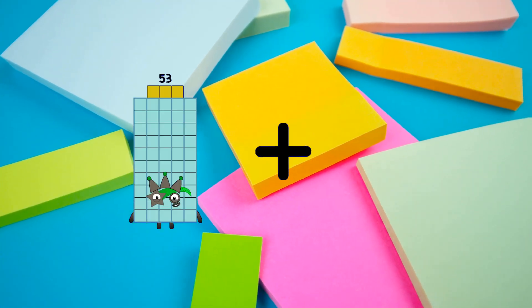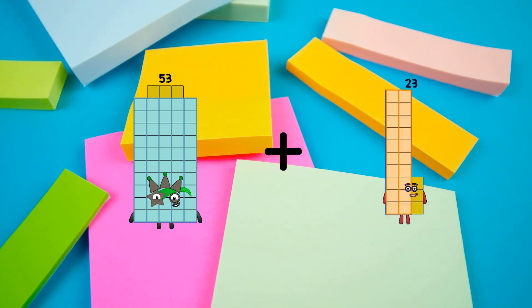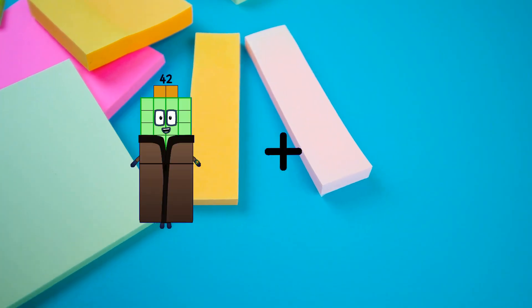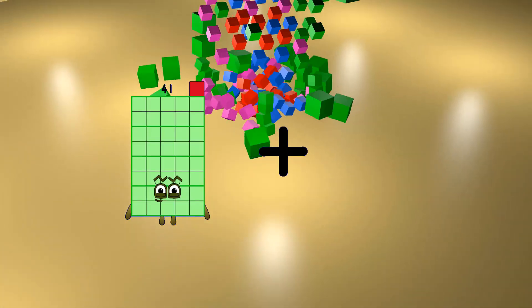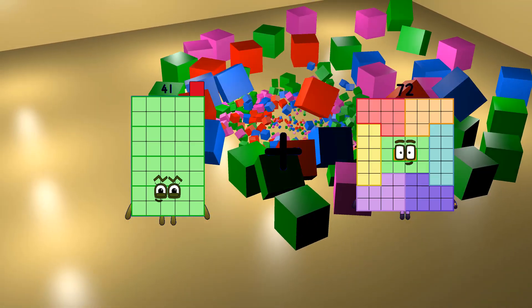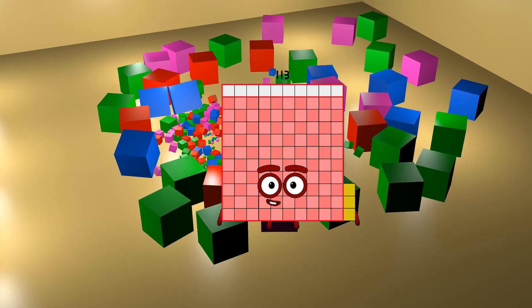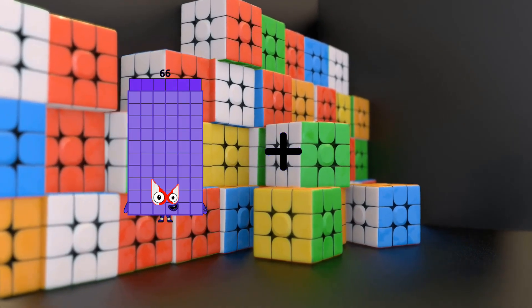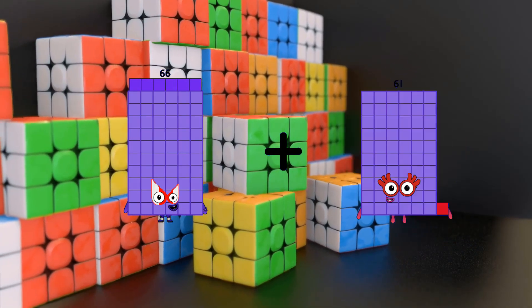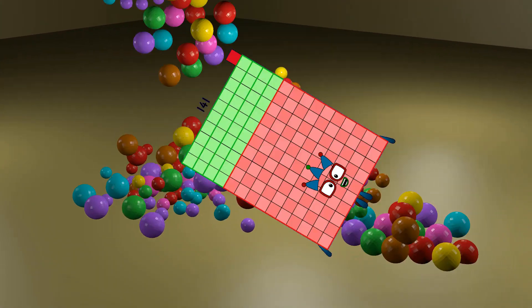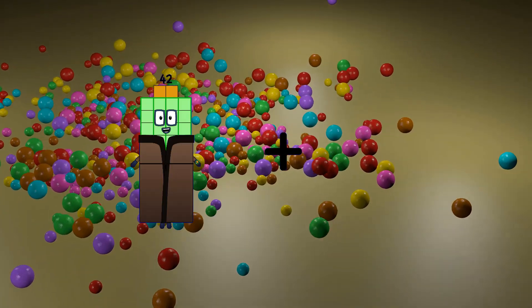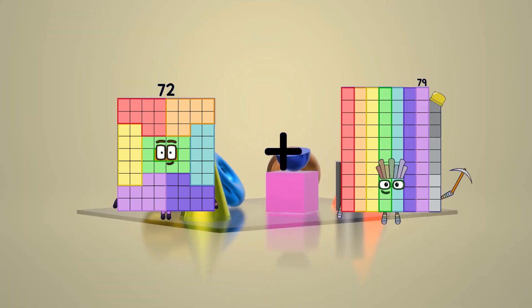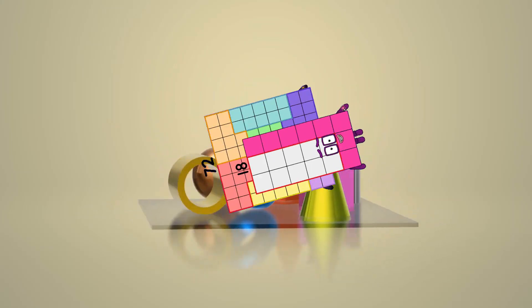53 plus 53 equals 106. 41 plus 72 equals 113. 66 plus 75 equals 141. 72 plus 18 equals 90.